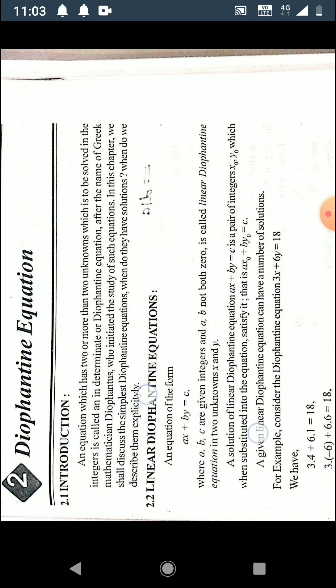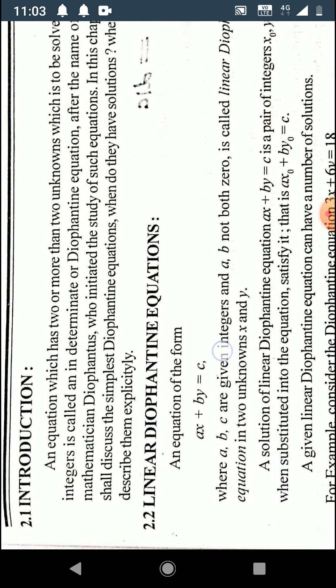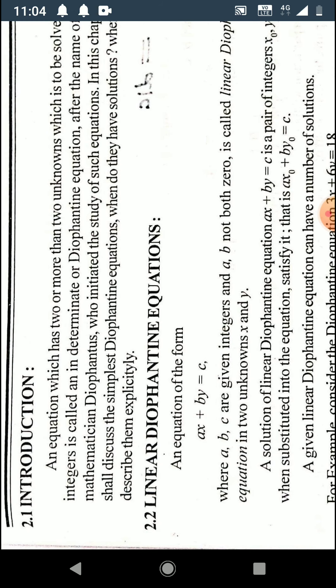The general form of a Diophantine equation in two unknowns is ax plus by equals c. In this equation the coefficients a, b, and c are integers, and a and b are both not equal to zero. Then ax plus by equals c is called a linear Diophantine equation.